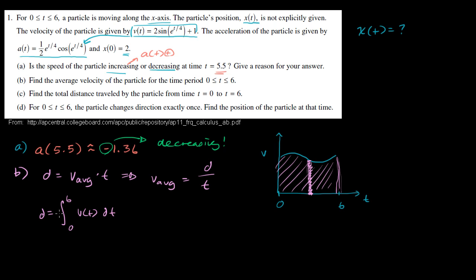If you want the average velocity, you find the distance — which is this definite integral — and divide by the elapsed time. Our change in time is 6, since we start at 0 and finish at 6. So we just have to evaluate this definite integral, which is not easy to do analytically. Luckily, we can use a calculator, and then divide by 6.